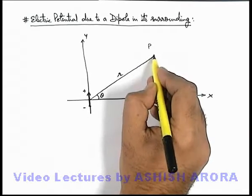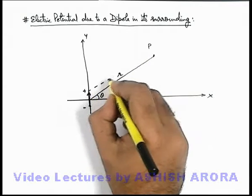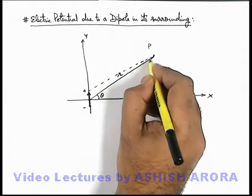And we wish to find out the potential. We know that due to the positive charge, a positive potential exists at point P.